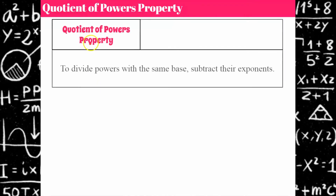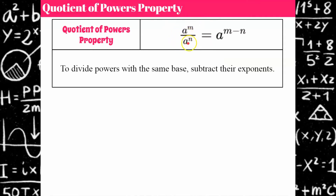The quotient of powers property means that you're going to divide powers with the same base and subtract their exponents. So algebraically speaking, we have our base A is the same: A to the M divided by A to the N is equal to the same base and you take the exponents and subtract them — so M subtract N.